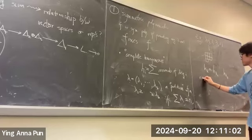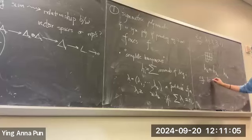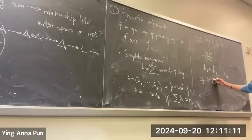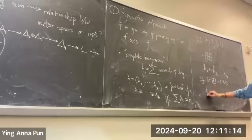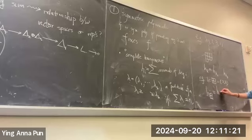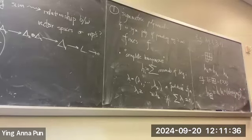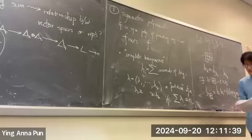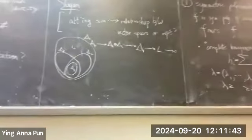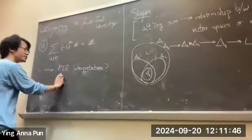As an example, if lambda is the shape (2,2), then H_lambda equals H_2 times H_2. In two variables, H_2 is x² + xy + y², and then you square that. That's what H of this shape is. So that's the complete homogeneous family of symmetric polynomials.